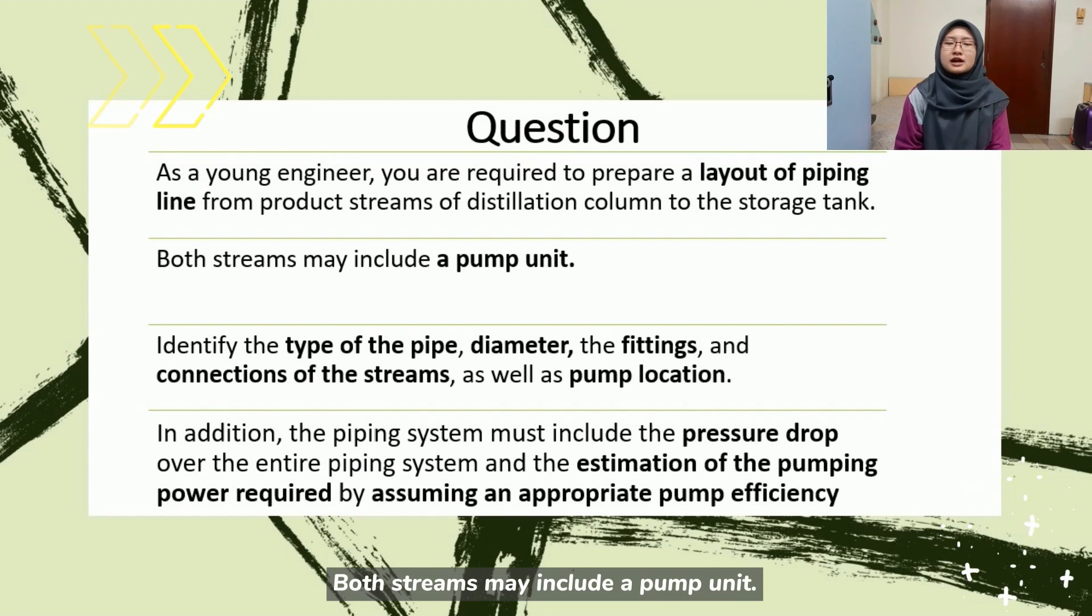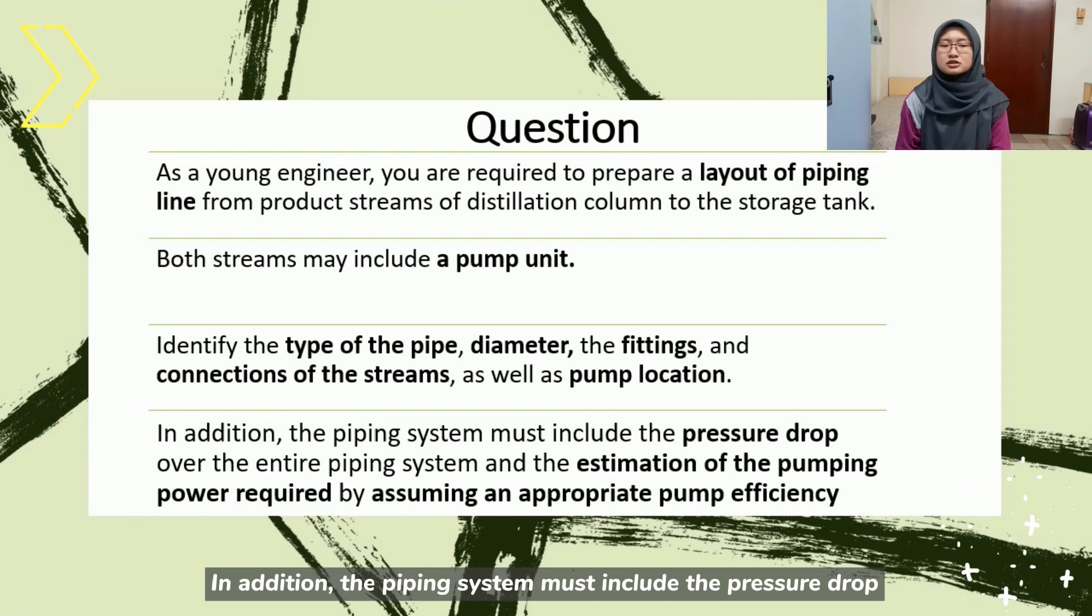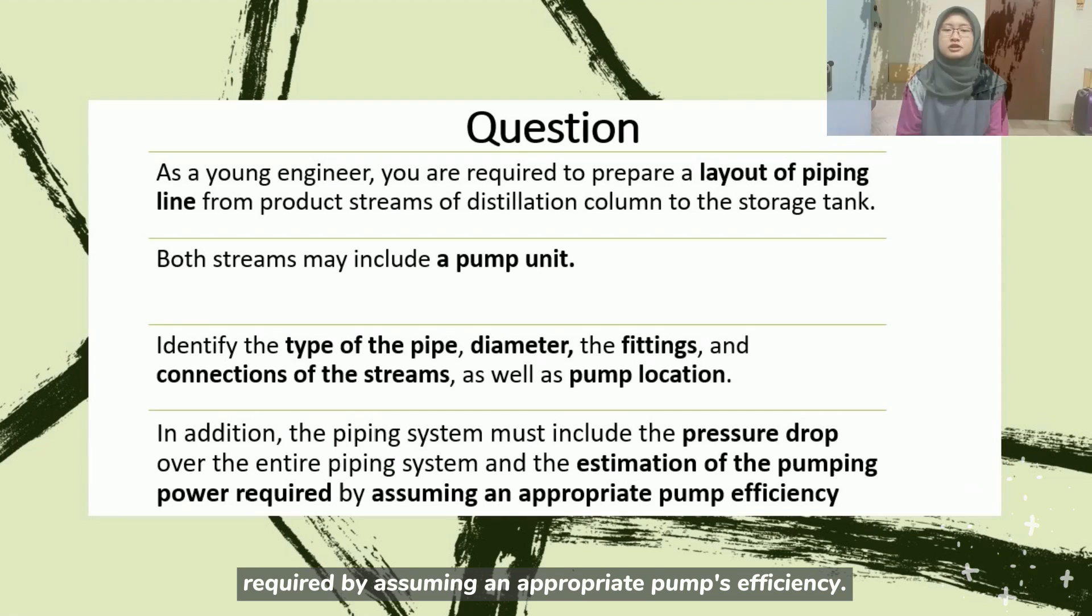Both streams may include a pump unit. Identify the type of pipe, diameter, fittings, connections of the streams as well as pump location. In addition, the piping system must include a pressure drop over the entire piping system and the estimation of the pumping power required by assuming an appropriate pump efficiency.